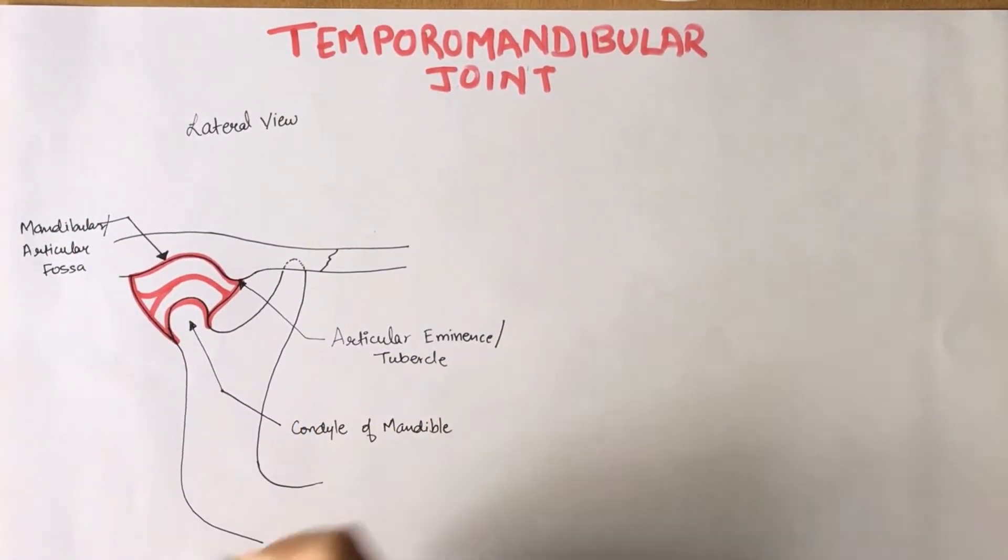The mandibular fossa and the articular tubercle are of squamous area of the temporal bone. One of the key characteristics of this joint is that the articulating surfaces are covered by fibrocartilage, unlike hyaline cartilage that covers most of the joints in the human body.